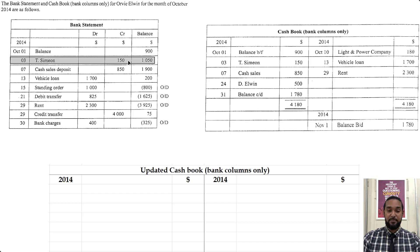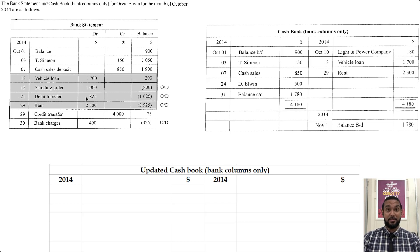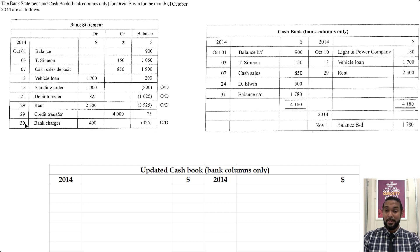We got money from T-Simeon — it's in the credit column so it's an inflow — 900 plus 150 is 1050. Then cash sales deposit brought it to 1900. But then we had outflows: vehicle loan 1700 carries the balance to 200, standing orders 1000 takes us to negative 800 — that's an overdraft. Debit transfer of 825 carries the overdraft to 1625, rent 2300 makes it bigger, then a credit transfer of 4000 brings us out, but bank charges of 400 puts us back into overdraft.